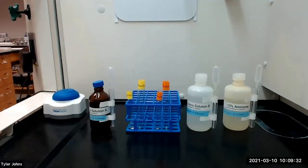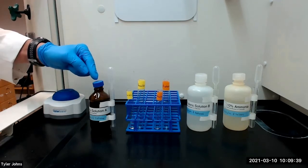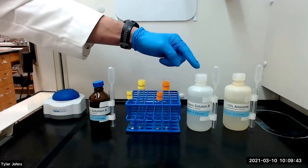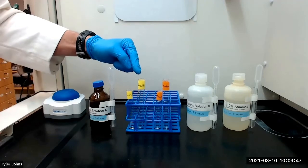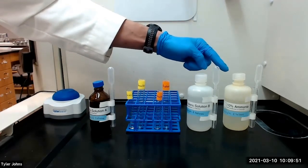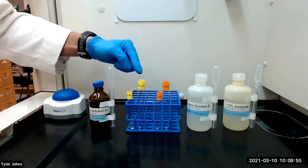We will next prepare the reagent for each test compound by mixing one milliliter of Tollens solution A, a silver nitrate solution, with one milliliter of Tollens solution B, a 10% sodium hydroxide solution. A precipitant of silver oxide will form. We will then add enough 10% ammonia solution to the reagent mixture to just barely dissolve the silver oxide.